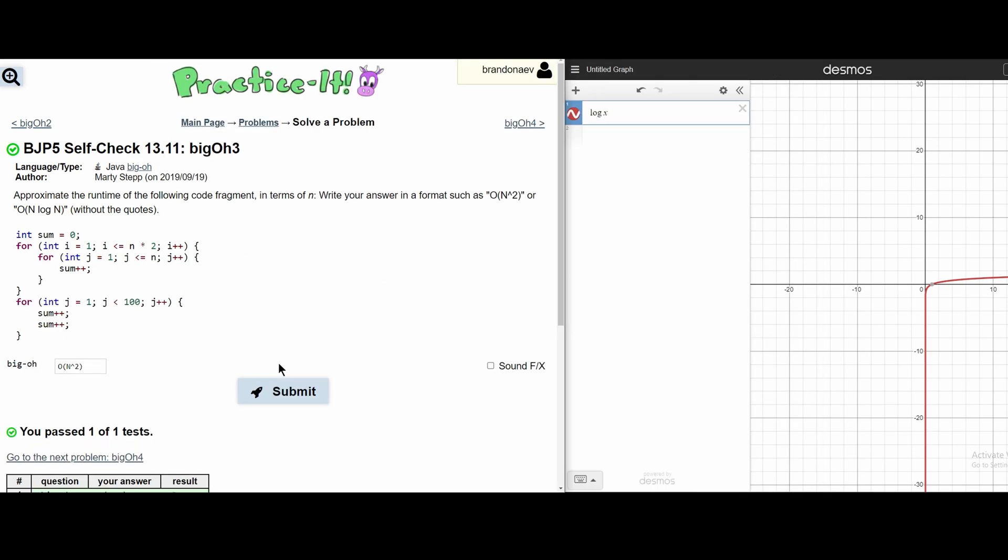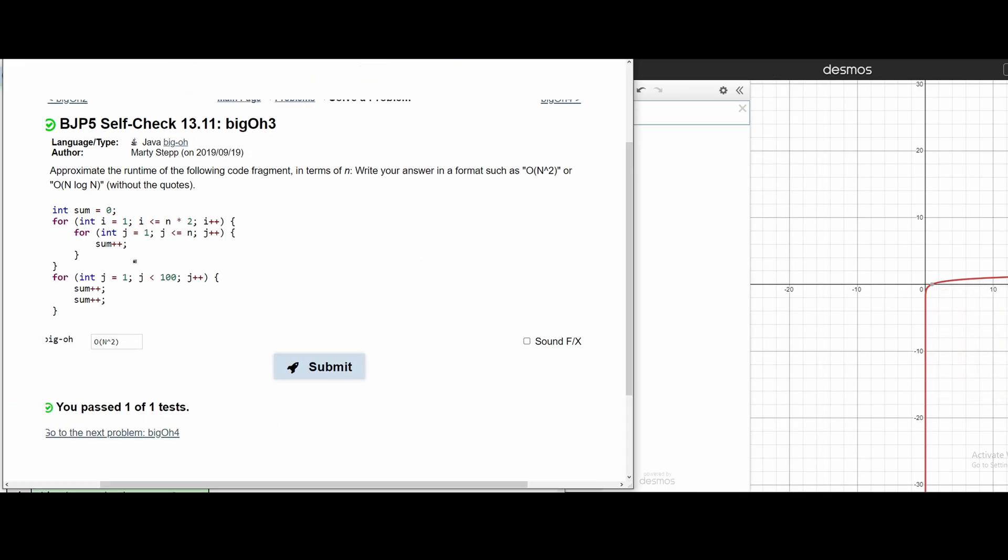For our next problem, we have Big O 3. We have two for loops. First, we are going to look at our bottom for loop.